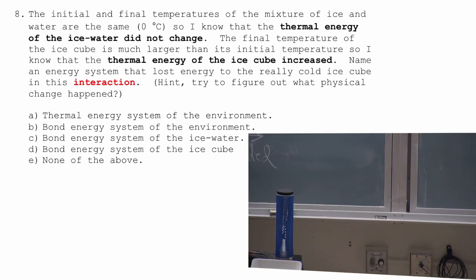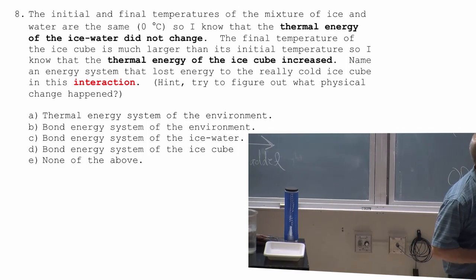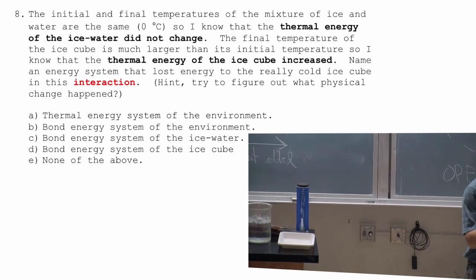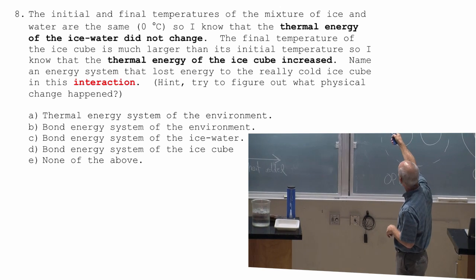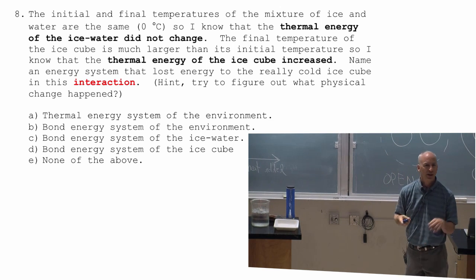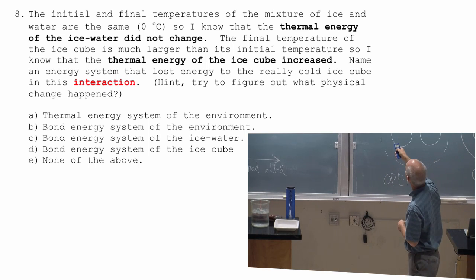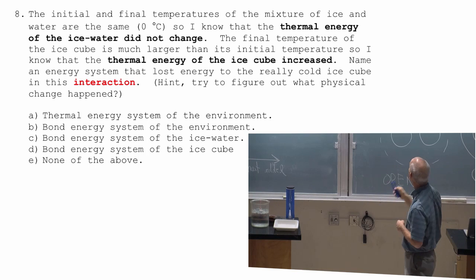Initial and final temperatures of the mixture and ice water are the same. The ice water started out at zero. It ends up at zero. The ice chunk that I threw into it ends up at zero. The final temperature of the ice cube is much larger than it was initially. It went from minus 196 up to zero. The thermal energy of the ice cube increased. It went up because the temperature of the ice cube went up.